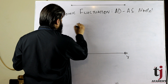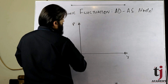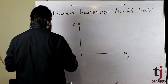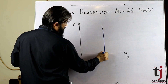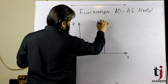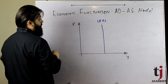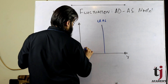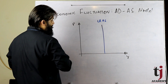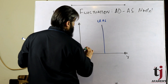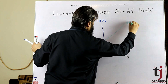We have output and price level. We have seen the long run aggregate supply curve because all adjustments have been long run. We also have the short run aggregate supply curve.